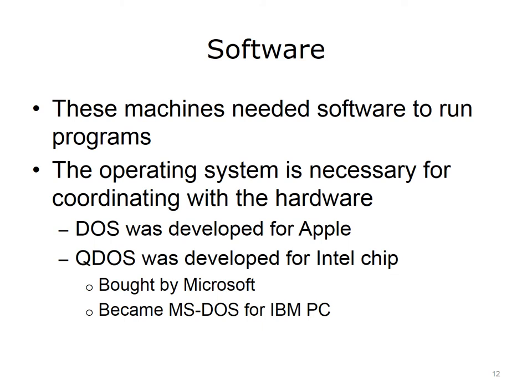Software was an integral part of the popularity of PCs. The most important piece of software on a computer is its operating system, or OS. The OS coordinates the hardware and all the other software on a system. The disk operating system, or DOS, was developed for Apple by Shepardson Microsystems for coordinating the use of the Motorola chip in Apple products. IBM needed an OS for their PC based on the Intel chip. It approached Microsoft, which didn't have an OS at the time — they did have compilers available, but not an OS. Bill Gates recommended talking with Digital Research, which did have one, but Digital Research didn't return IBM's call. In the meantime, Microsoft acquired QDOS from Seattle Computer Products, which Microsoft distributed to IBM along with their compilers and called MS-DOS. The rest, of course, is history.